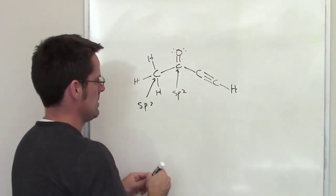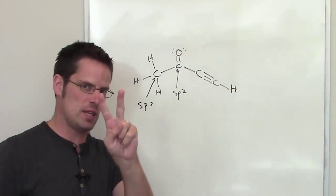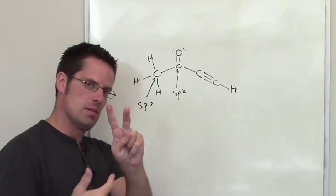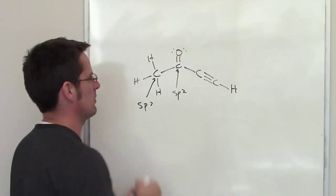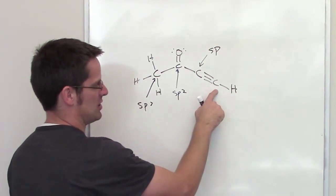This carbon right here has a carbon and a carbon around it. That is two things, so it is sp. And I always have to be careful with my finger when I'm doing that. Similarly, this carbon right here has two things around it - a carbon and a hydrogen - so it is also sp.